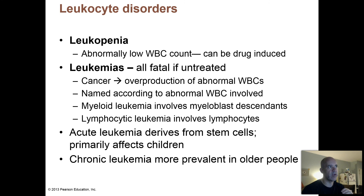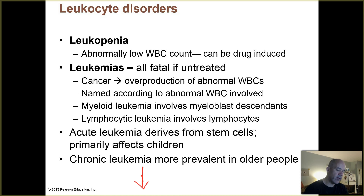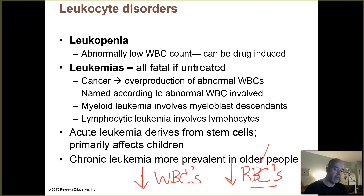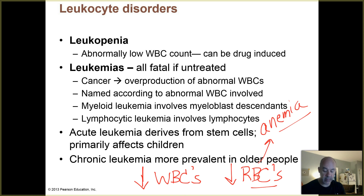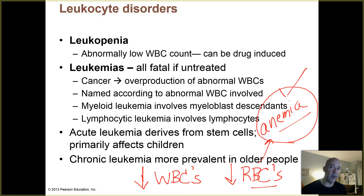Leukemias are bad because all these abnormal cells dividing out of control in your bone marrow wind up crowding out other cell types, leading to decreased production of normal WBCs and red blood cells. Sometimes one of the first signs of leukemia is that a person becomes anemic. That happened with a friend of mine — he was extremely tired and short of breath doing everyday activities because he had anemia due to leukemia.